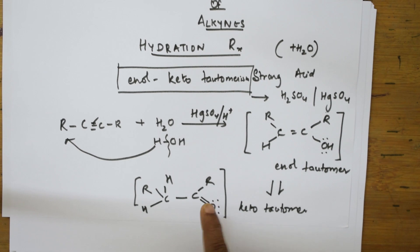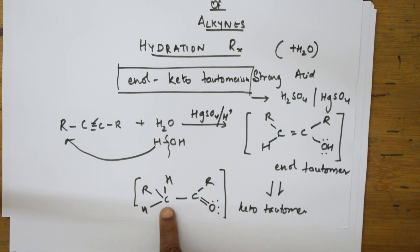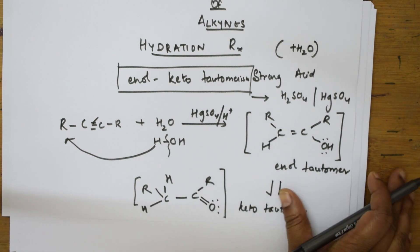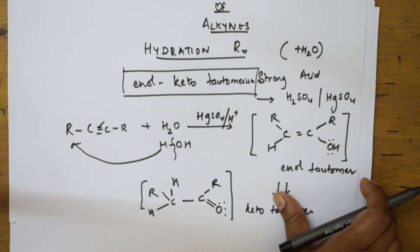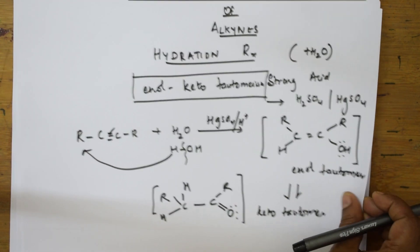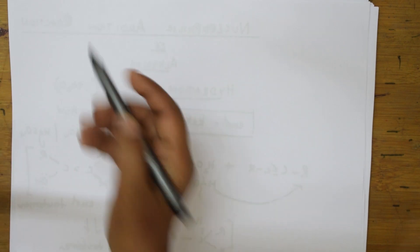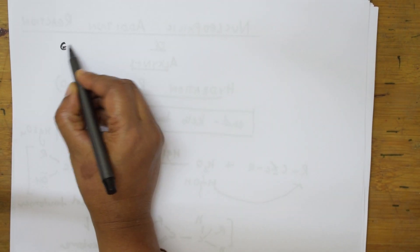In keto-enol tautomerism, one hydrogen from the carbon adjacent to the C=O shifts to that carbon. That is the essence of keto-enol tautomerism. Let me show you one more example.